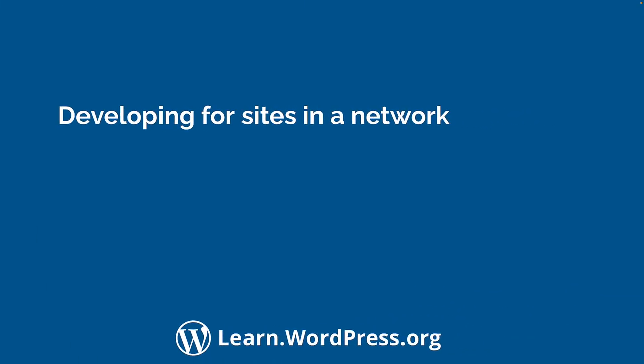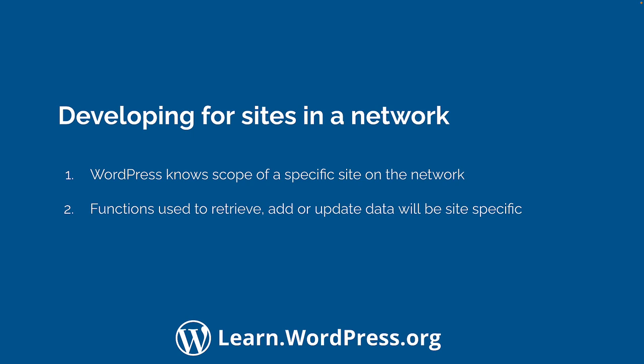When you are rendering any content in the scope of a site on the network, WordPress Core is clever enough to know that you are working inside the scope of that site. This means that any functions you use to retrieve, add, or update information will get, add, or update the correct tables for the site you are currently working with. Additionally, if you use functions like RegisterPostType or RegisterTaxonomy, these will also be registered for the current site only.